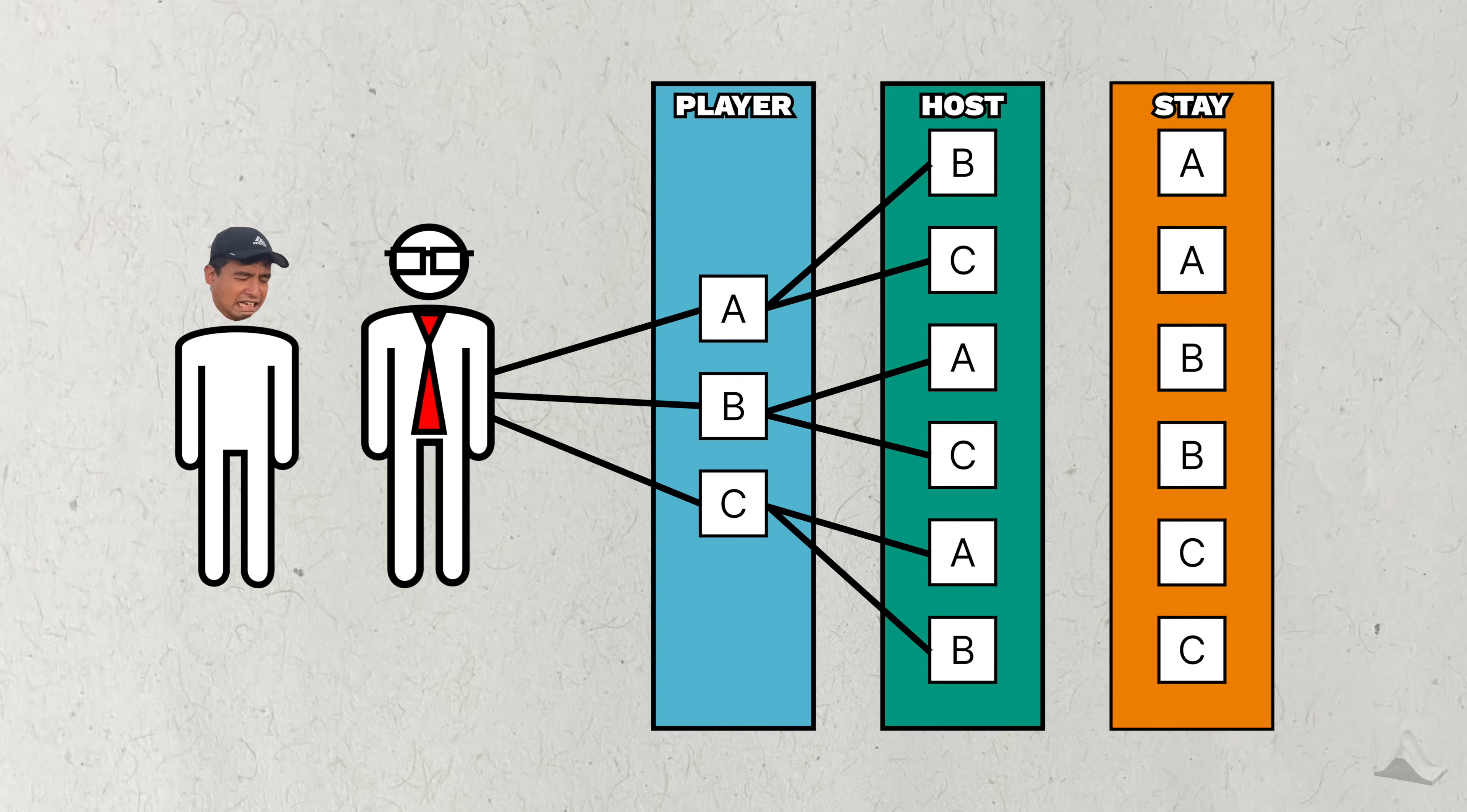This might not seem like much, but let's see how this plays out for the player. Under the stay strategy, these are the doors you'll end up with. Using the same probability calculation as earlier, we can see that each path has the same probability of happening. One sixth. Meaning that the player has a one third probability of winning if they stay. Now let's compare this to what the results would have been if you had switched the door. Notice anything? With this new host, it doesn't matter whether you stay or switch.